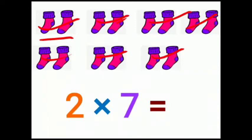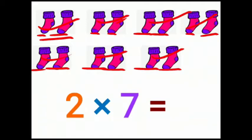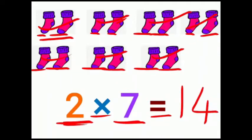How many socks do 7 pairs have? 1, 2, 3, 4, 5, 6, 7, 8, 9, 10, 11, 12, 13, 14 socks. Children, 2 socks, 7 pairs. 2×7 is equal to 14. 2 sevens are 14. 14 socks.